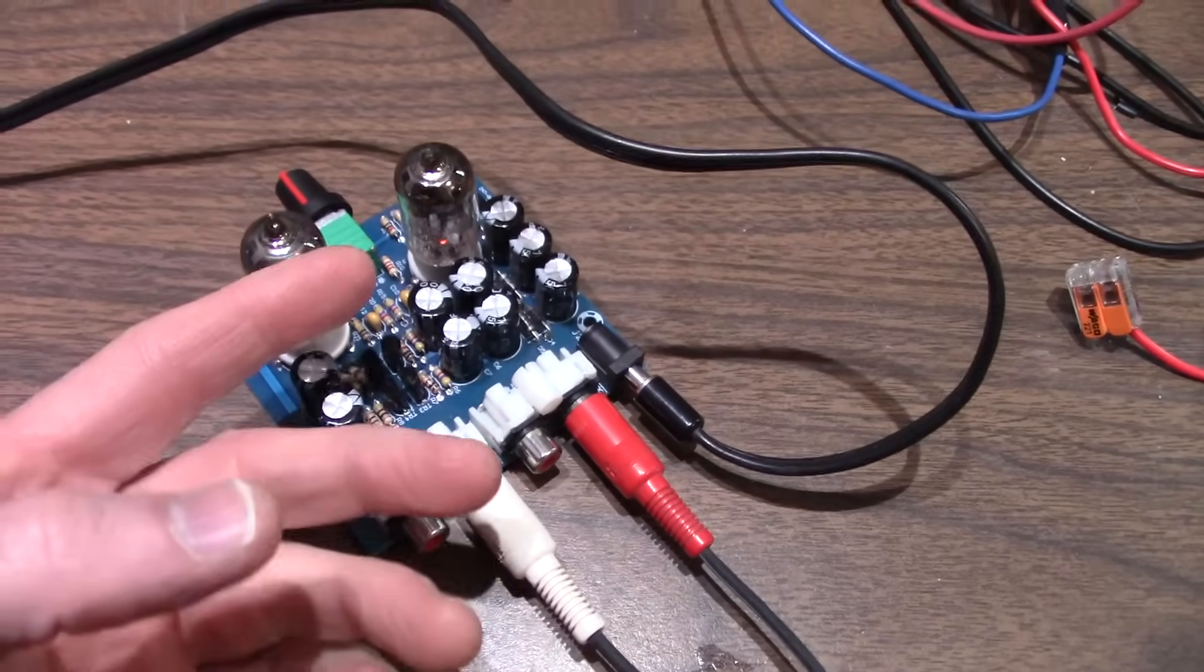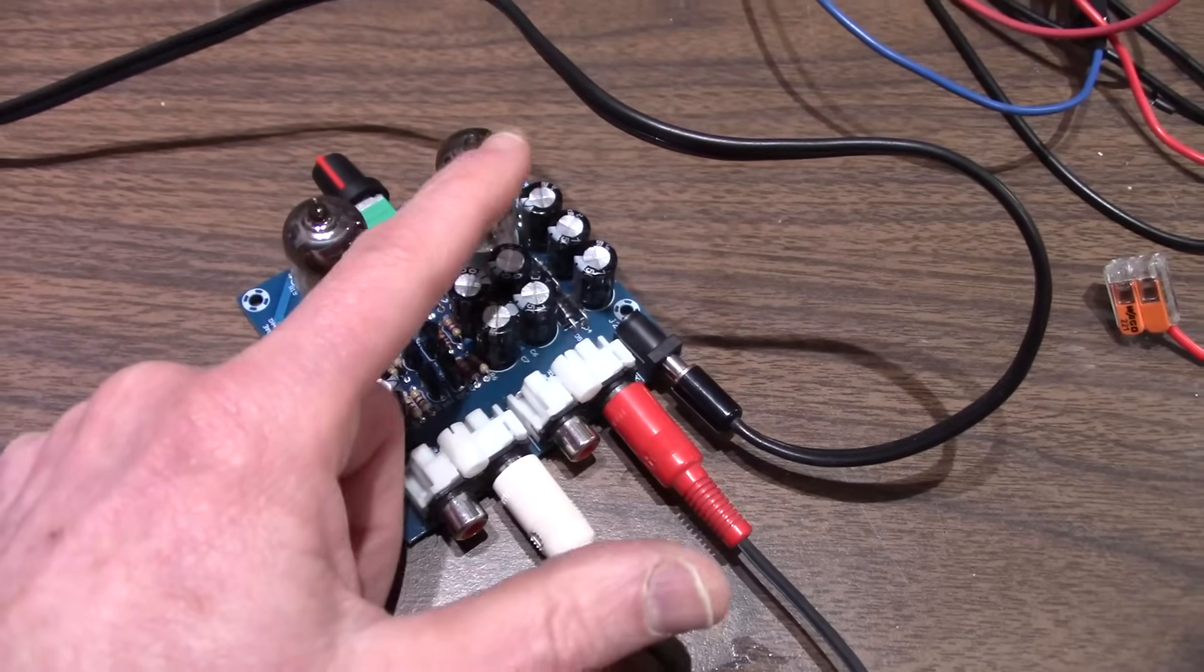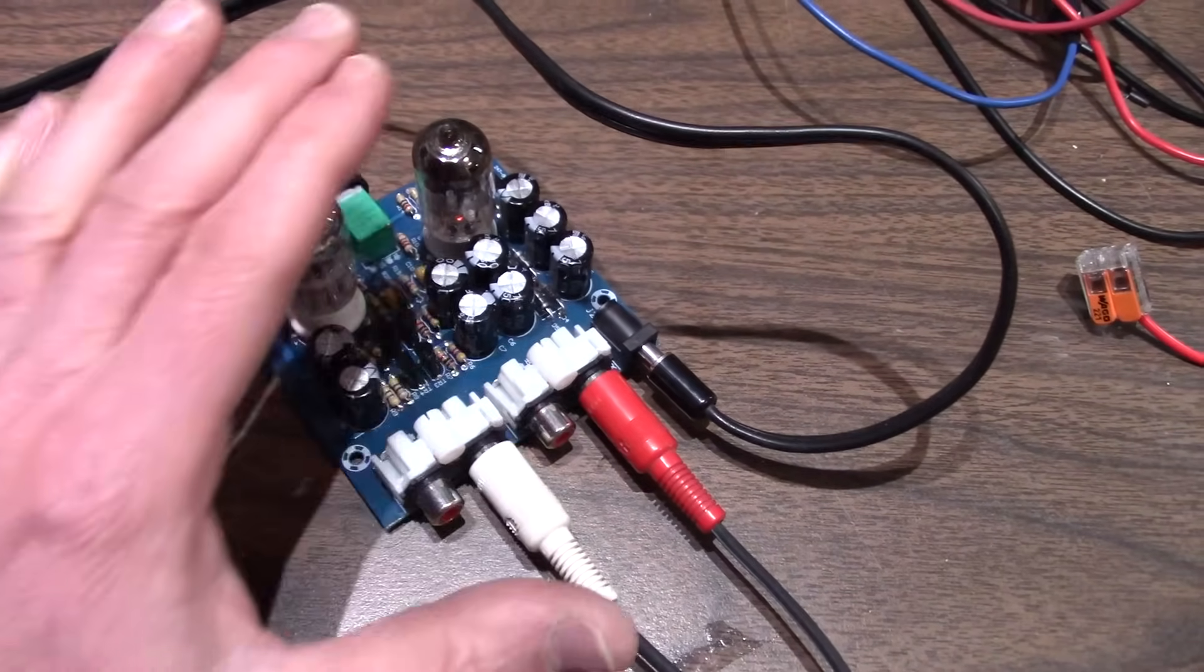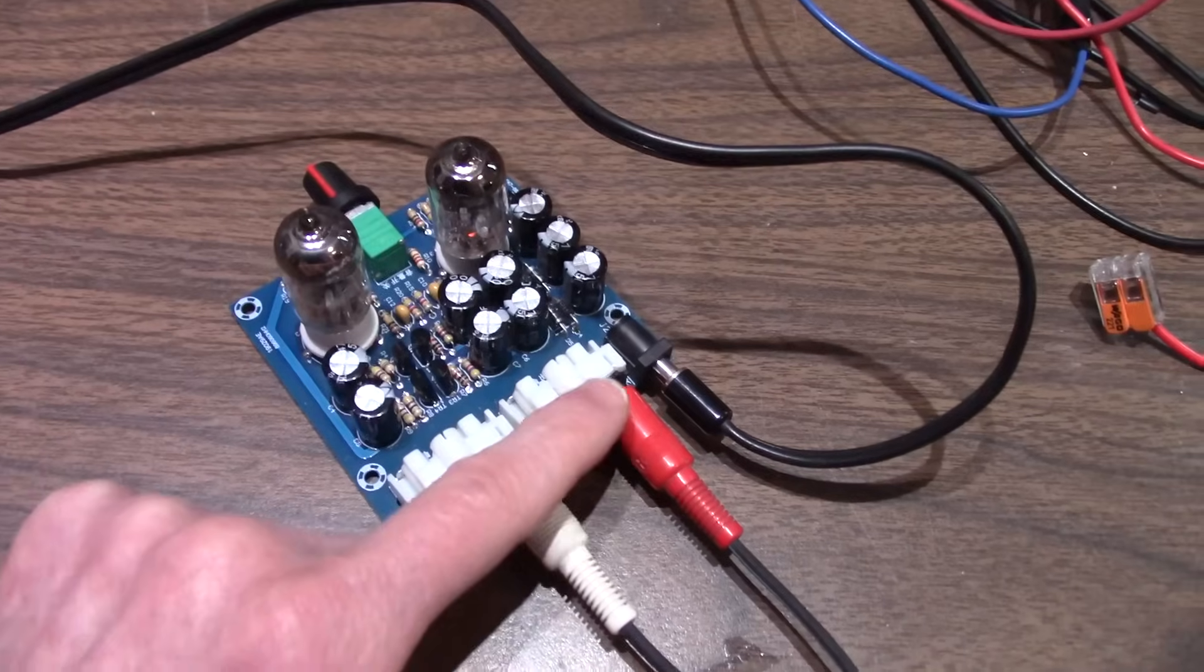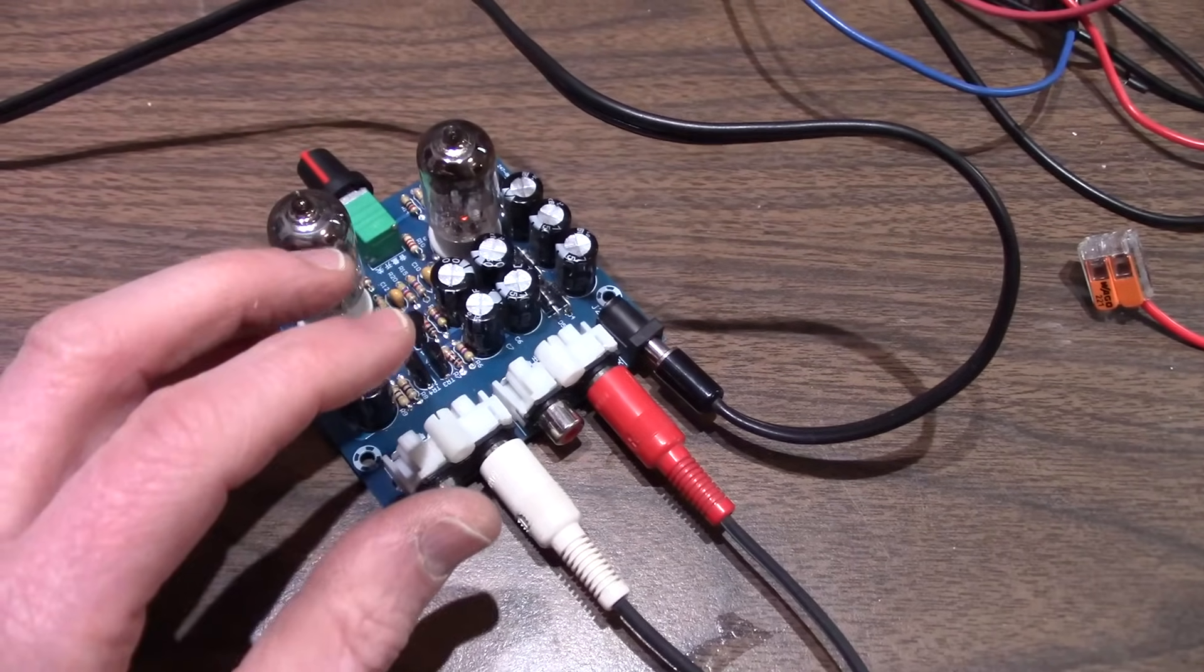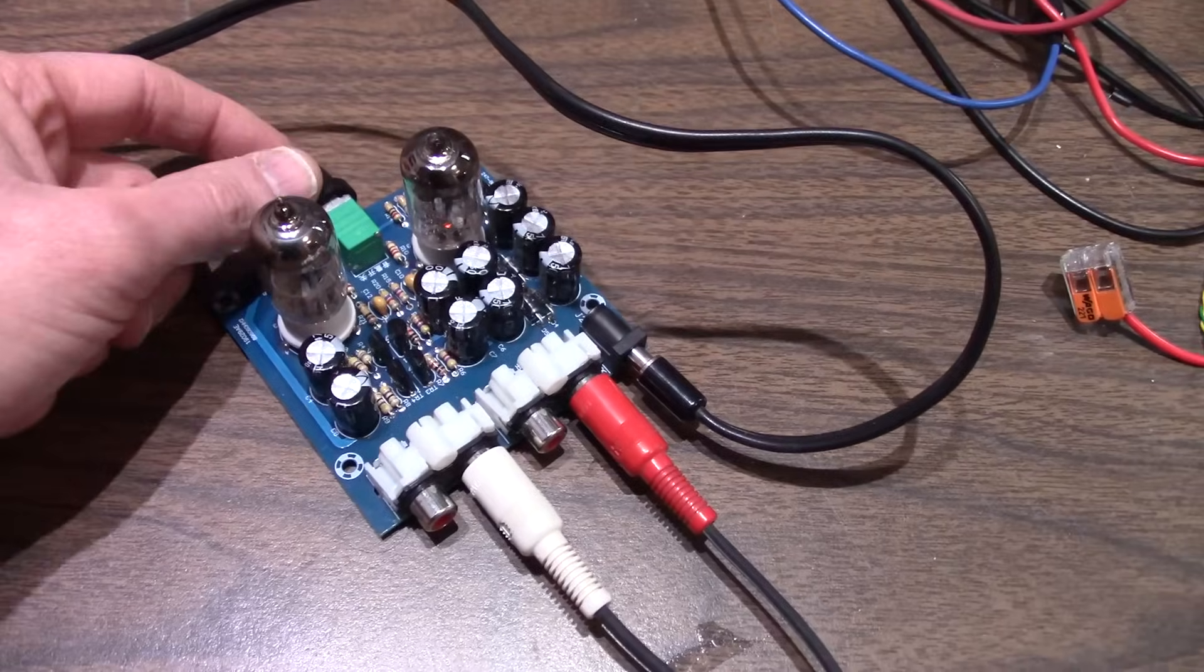For example, I know that the signal comes off the plate of this tube. And before the tubes warm up, there can be a high voltage on the signal line. Even though there is a blocking capacitor, that capacitor still has to charge up. But when you turn power on, there could be a large spike of voltage.